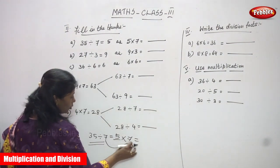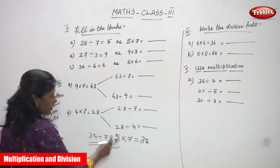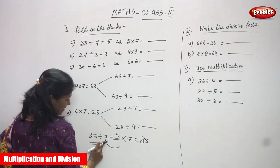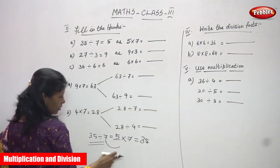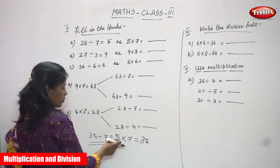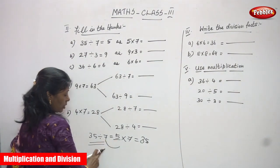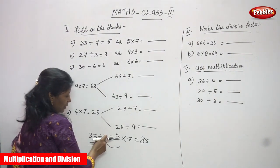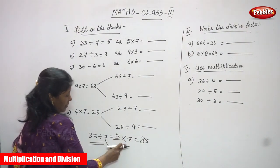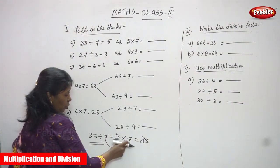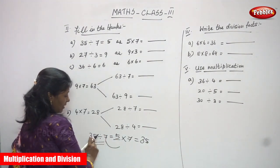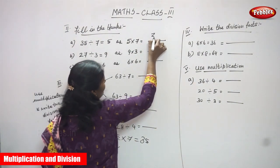So 5 into 7 — you know that answer is 35. Because here, 35 is divided by 7: 35 is the dividend, 7 is the divisor, and 5 is the quotient. Now this 7 is in the division place, so it goes to the opposite direction and becomes multiplication. So 5 into 7 — just copy that answer: 5 into 7 is 35.